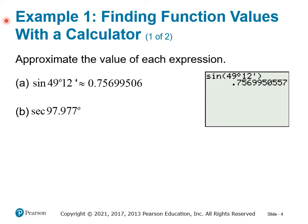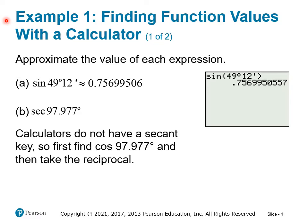For question B, the secant of 97.977 degrees — we don't have a secant button. So first find the cosine of 97.977, then take the reciprocal. Enter cosine, type 97.977, hit second apps, select number 1 for degree, close the parentheses, and hit enter.